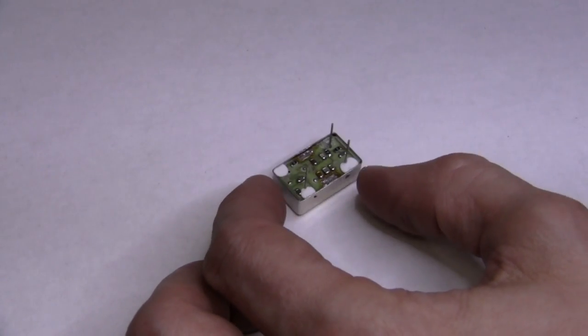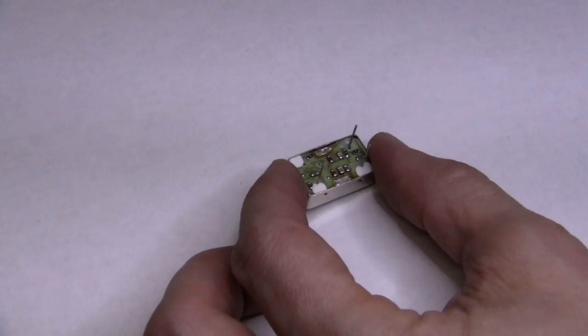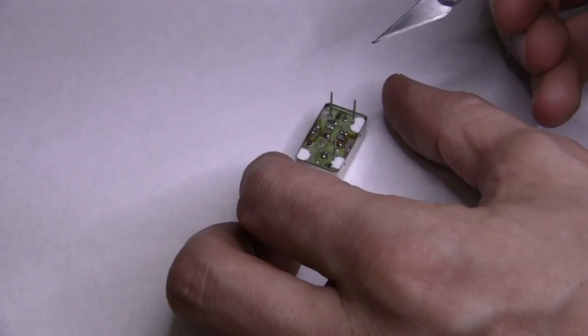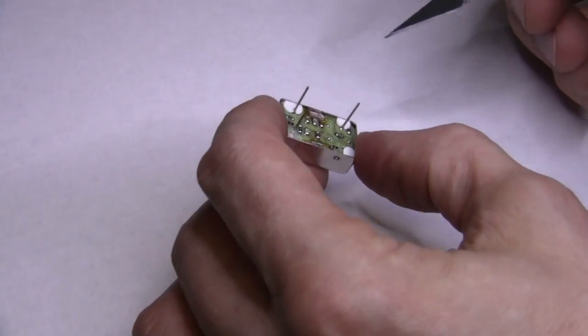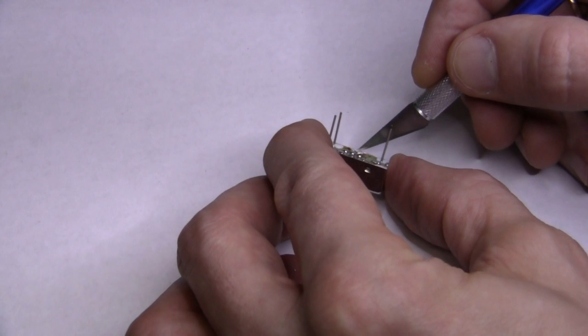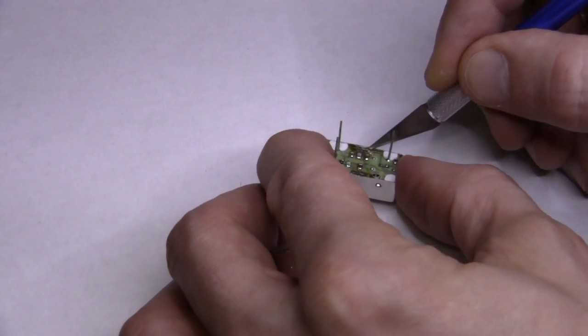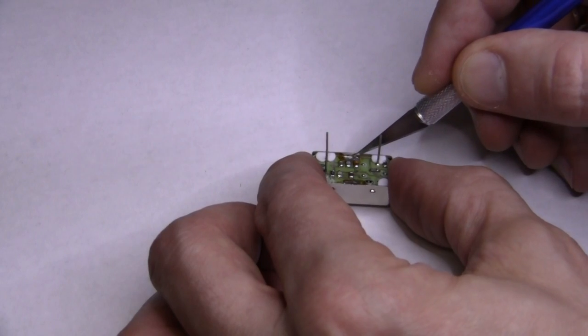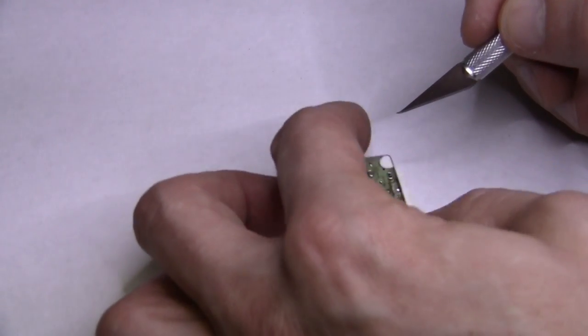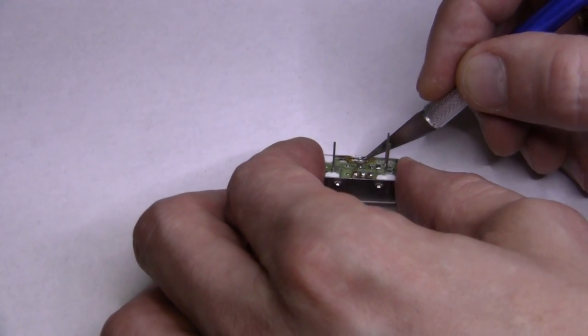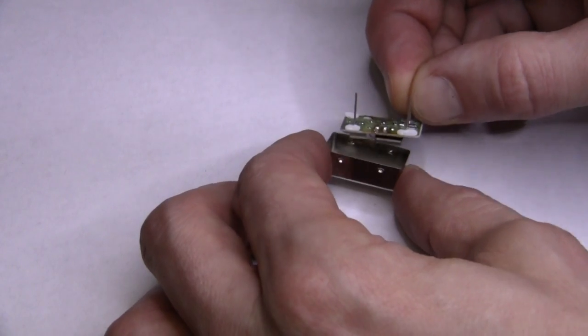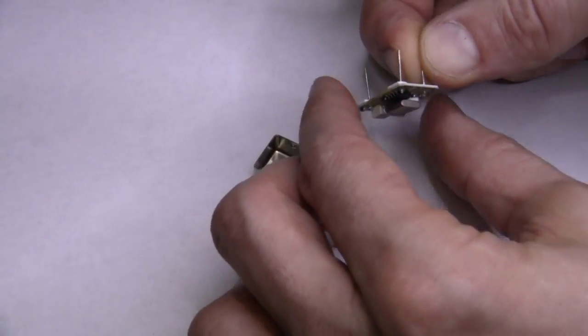All right, most of the solder is gone. Let's see how can I get further. All right, so this side is desoldered. About this side. Yeah, nice, there you go, cover off.